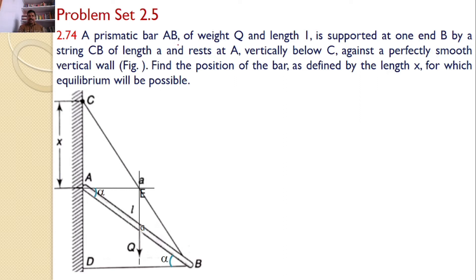A prismatic bar AB of weight Q and length L is supported at one end B by a string CB of length a and rests at A vertically below C against a perfectly smooth vertical wall. Find the position of the bar as defined by the length x for which equilibrium will be possible.